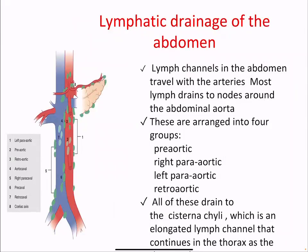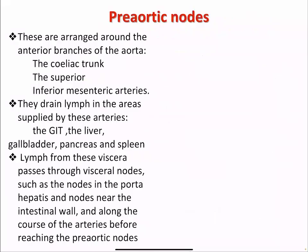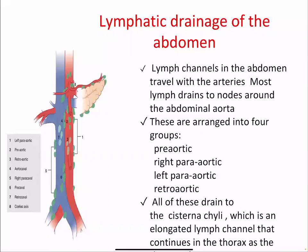Lymphatic drainage of the abdomen: lymph channels travel with the arteries. Most lymph drains to nodes around the abdominal aorta, arranged into four groups: the pre-aortic (anterior to the aorta), right para-aortic, left para-aortic, and retro-aortic (posterior to the aorta). All of these drain to the cisterna chyli, an elongated lymph channel that continues in the thorax as the thoracic duct. The groups include left para-aortic, pre-aortic, retro-aortic, aortocaval, right paracaval, pre-caval, retro-caval, and celiac axis nodes.